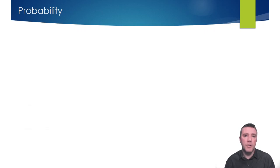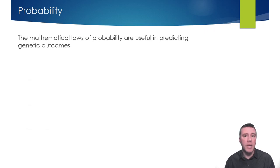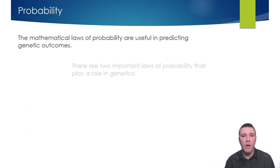In order to understand some of the concepts within genetics, a basic understanding of probability is required. The mathematics of probability allow us to make predictions about the possible outcomes of given events, such as the creation of offspring in a sexually reproducing species. Specifically, there are two important laws of probability that relate to genetics.